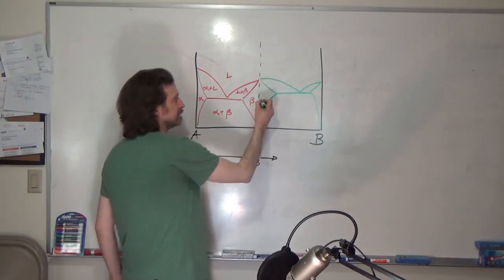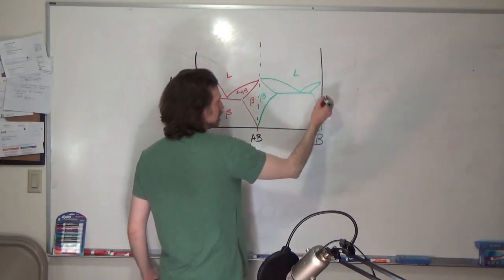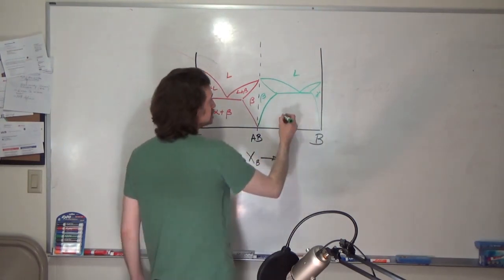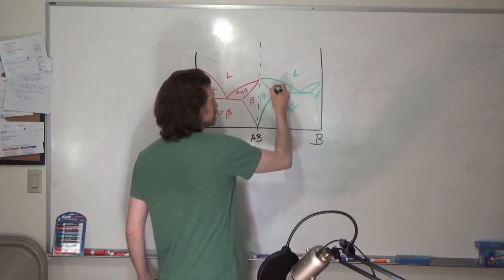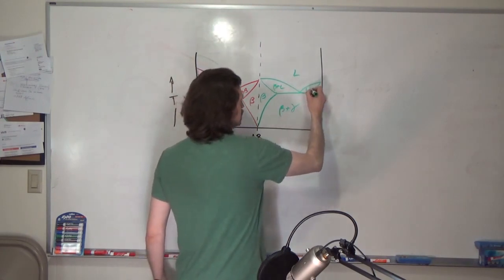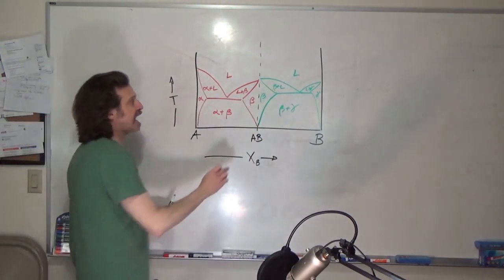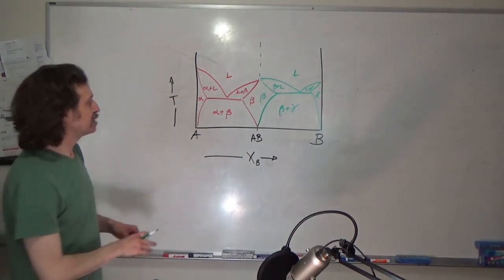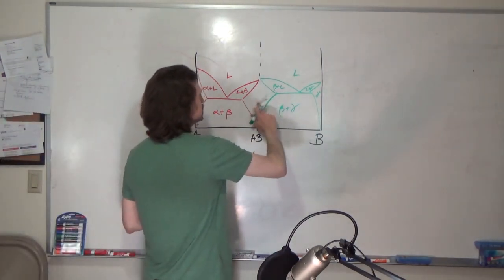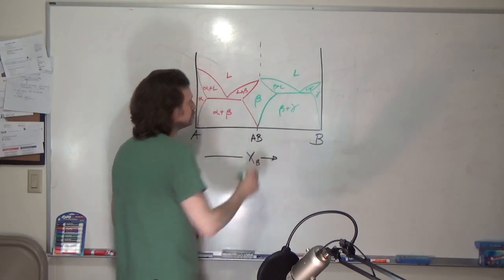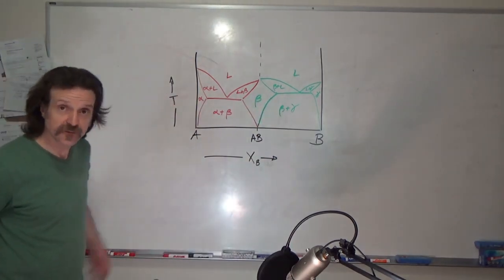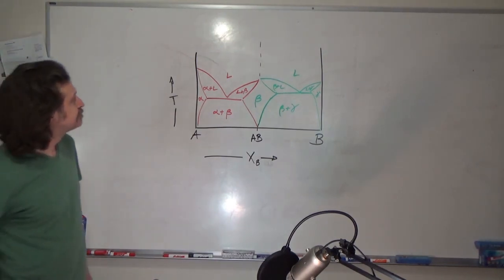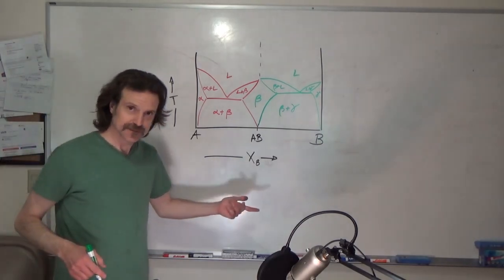On the right side we have beta, liquid, and gamma, filling in the two-phase regions: beta plus gamma, beta plus liquid, and liquid plus gamma. That is the type of phase diagram you could see on that side — that is beta. So that's one form of a phase diagram.